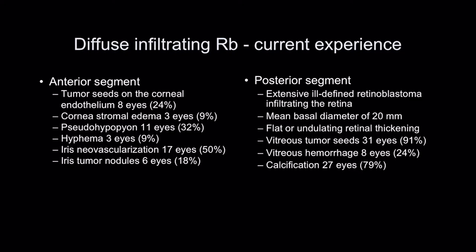In the posterior segment, you see an extensive ill-defined retinoblastoma infiltrating the retina, with a mean basal diameter of 20 millimetres and flat or undulating retinal thickening. Vitreous tumour seeds are seen in almost all cases — 91% — vitreous hemorrhage in a quarter, and calcification in almost 80%. All these cases were enucleated.